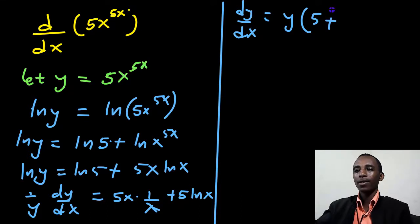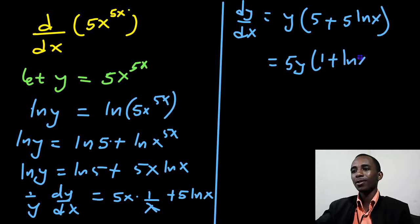Plus 5 times the natural log of x. So I can just pull out this 5, so that becomes 5y, 1 plus the natural log of x.